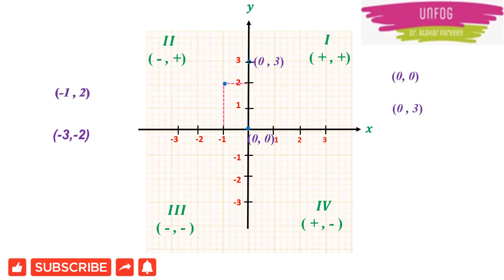Then we have the fourth point (−3, −2), which clearly shows that both x and y are negative, so the point lies in the third quadrant. The x value is −3 and the y value is −2, so the point is plotted there in the third quadrant.